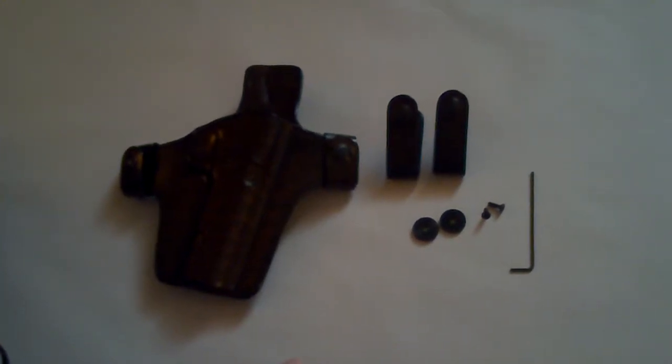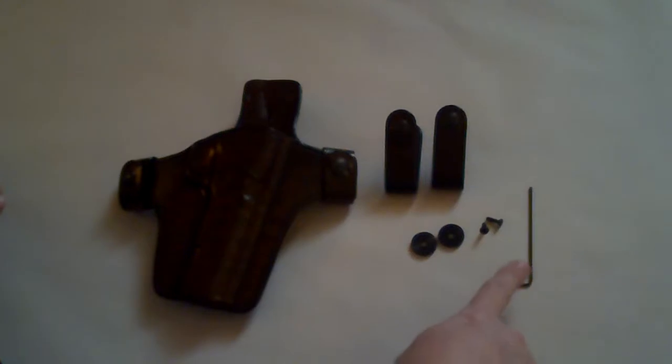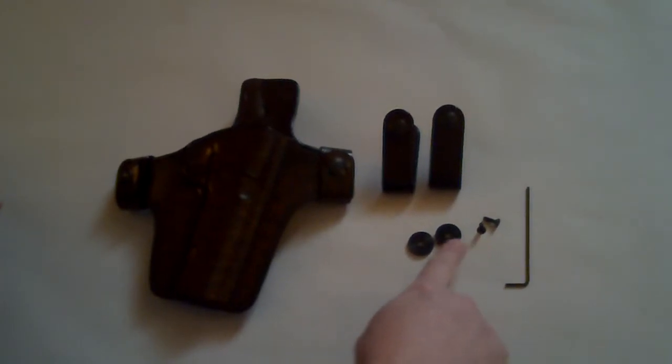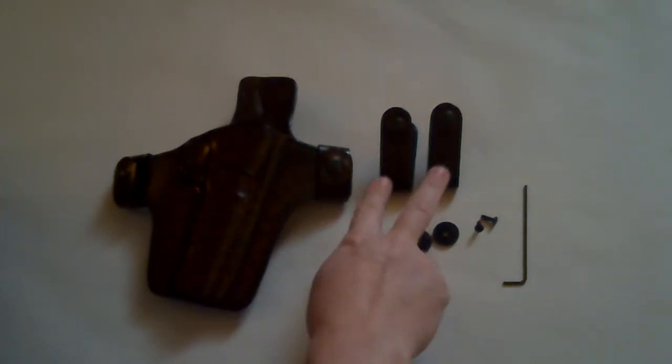Inside the little baggie when you received your holster, you should have an allen wrench, a pair of screws, a pair of spacers, and a pair of straps.